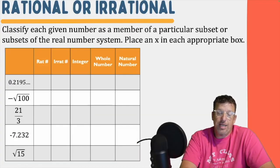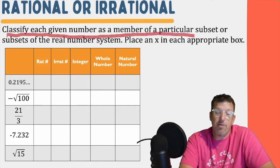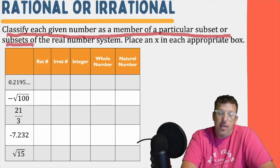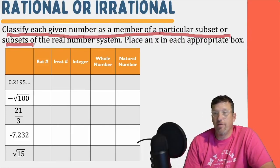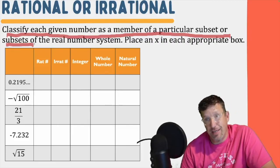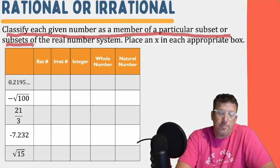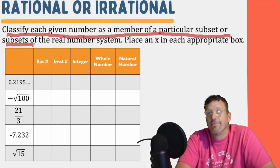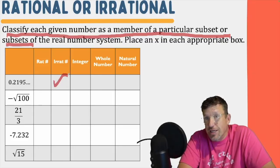Let's try one more section. Now classify each given number as a member of a particular subset or subsets. Look at these numbers and put a check mark in every box they should go into. Some of them will have one box, some will have a lot of boxes. So 0.2195... goes on forever — that's an irrational number, and it's nothing else. Irrational numbers are their own set of numbers.